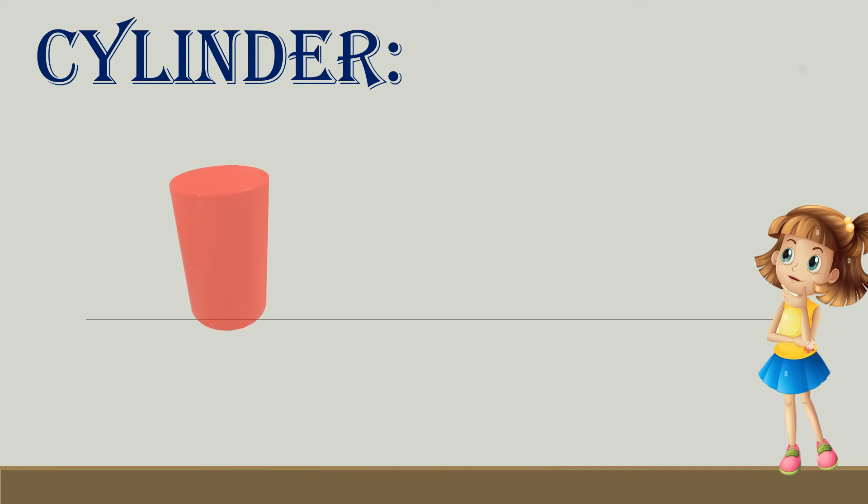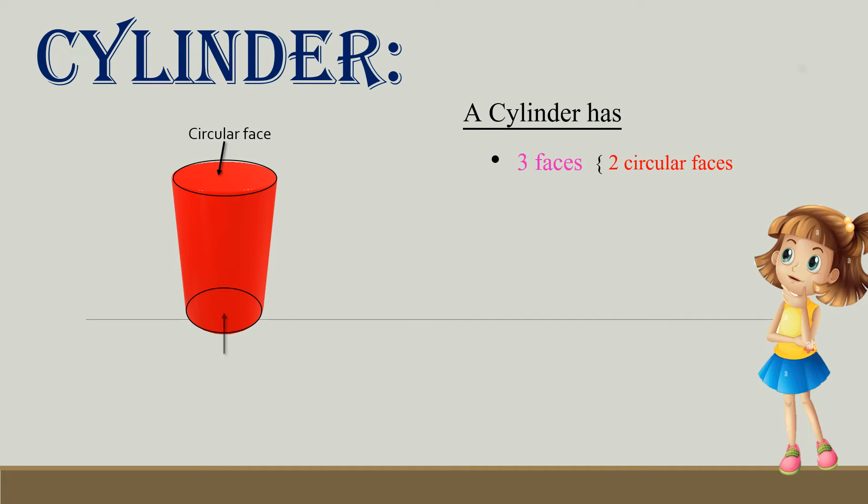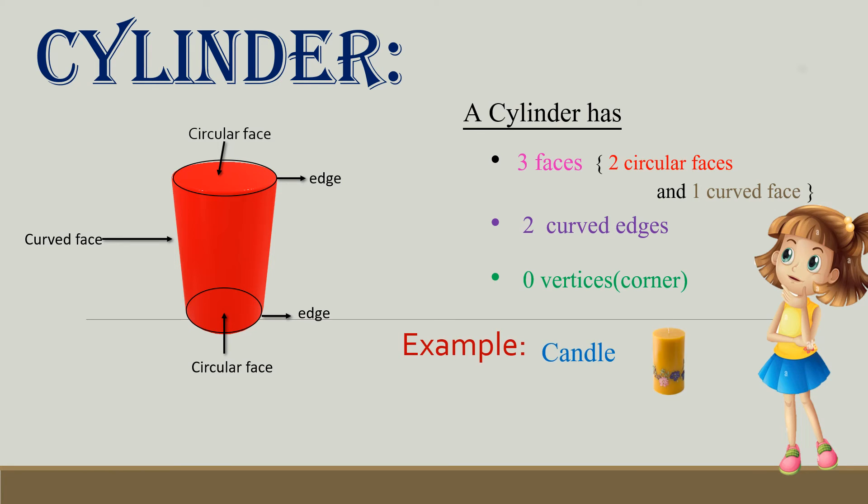Cylinder. A cylinder has three faces: two circular faces - one, two - and one curved face. Total three faces, two curved edges, and no vertices. So, a cylinder has three faces, two curved edges, and zero vertices. Examples: candle and battery cell.